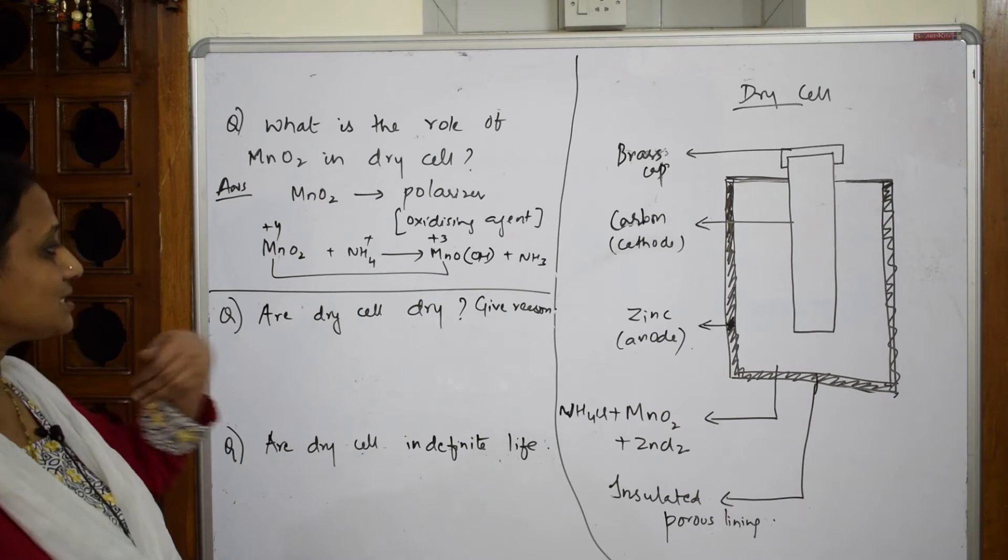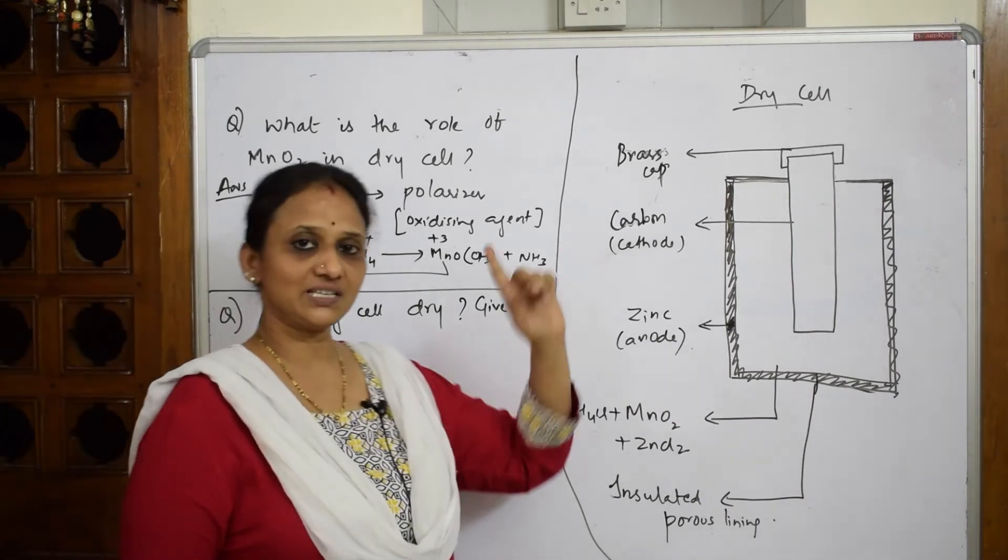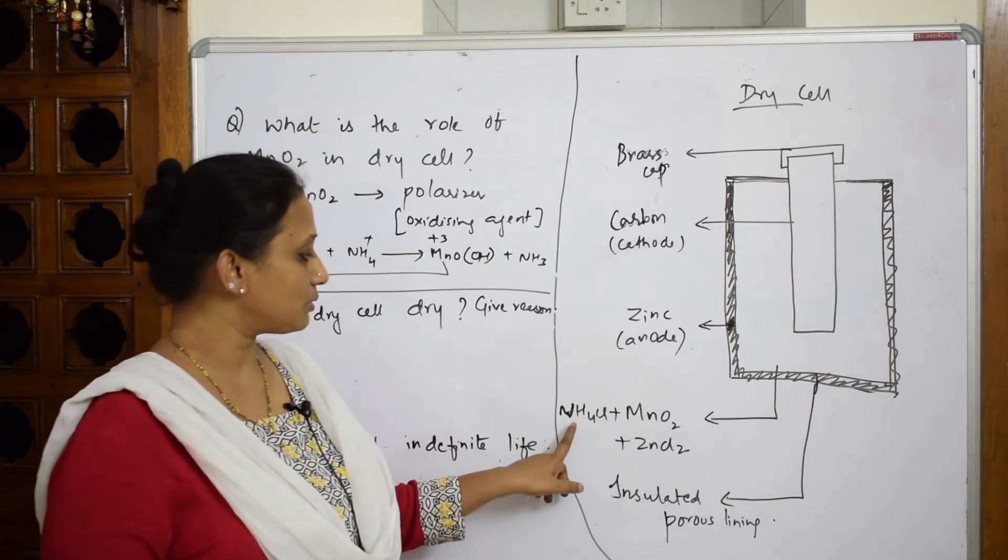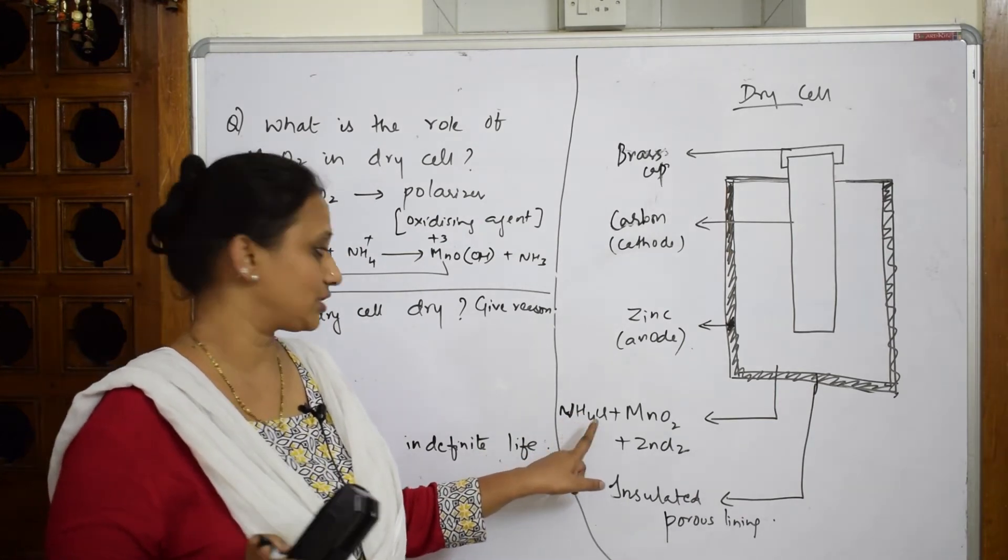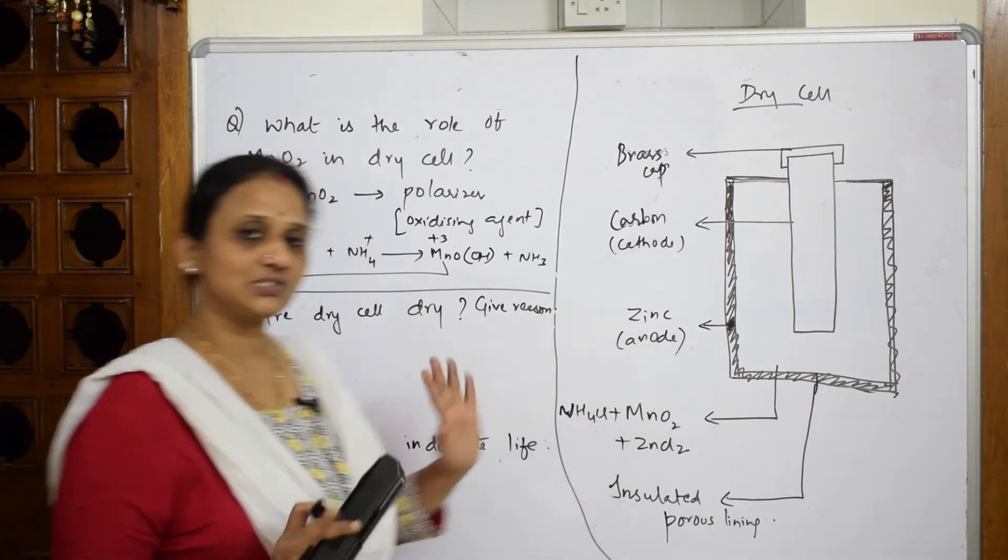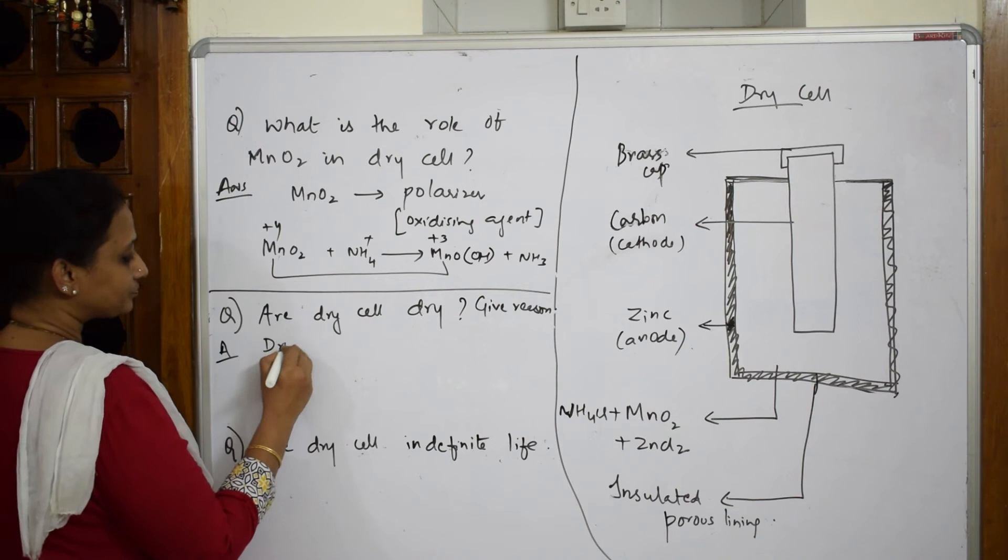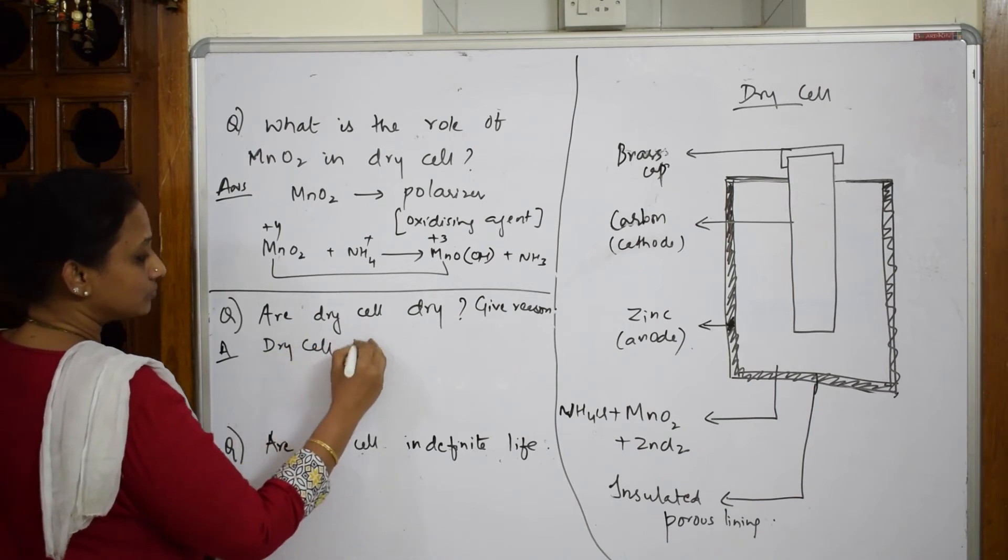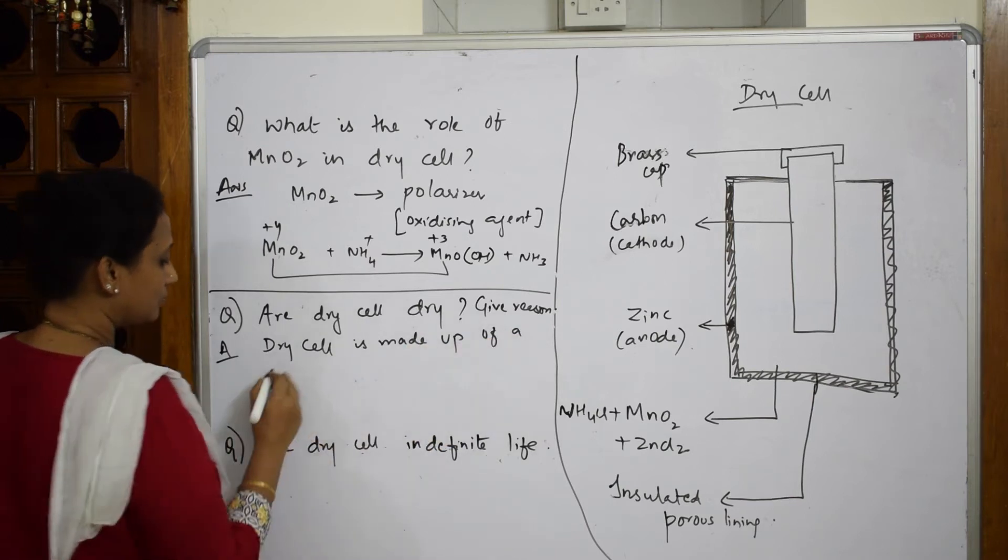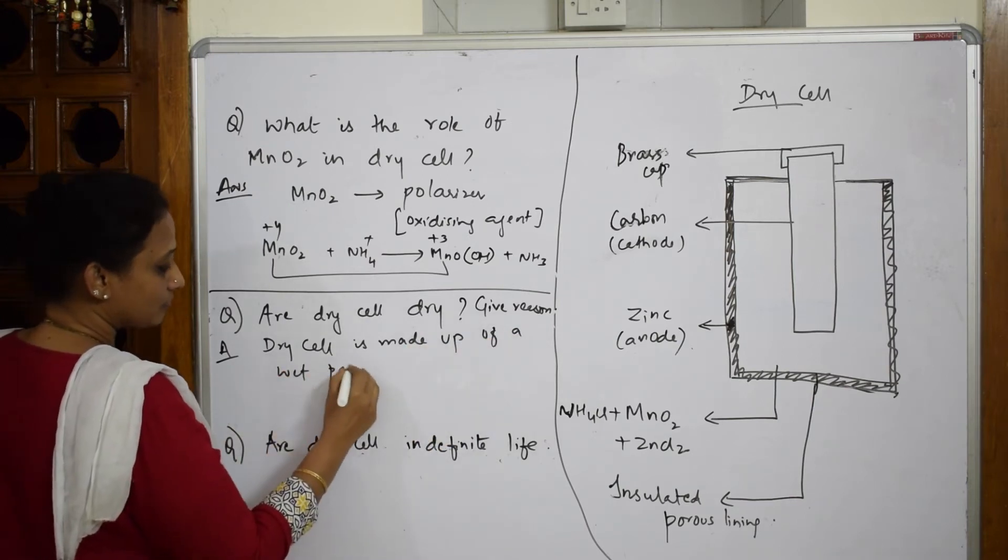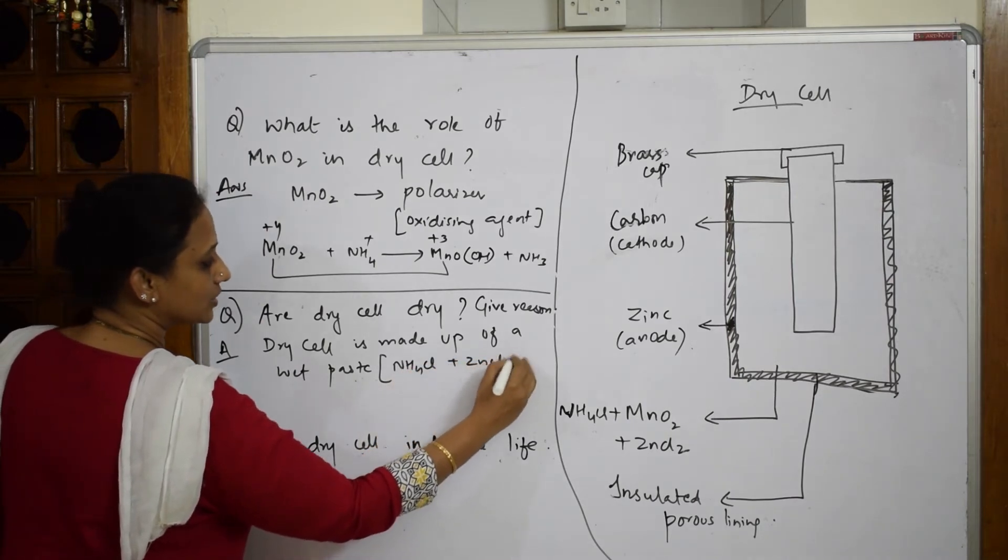Right, let's come back and see dry cells. Give reasons. Now basically whenever we take dry cell, important: you have to remember there is an electrolyte, it contains a wet paste of electrolyte that is ammonium chloride and zinc chloride. First let us write: dry cell has or dry cell is made up of